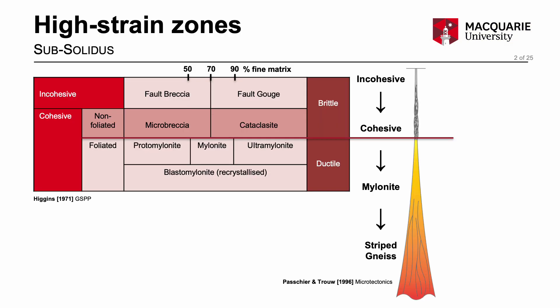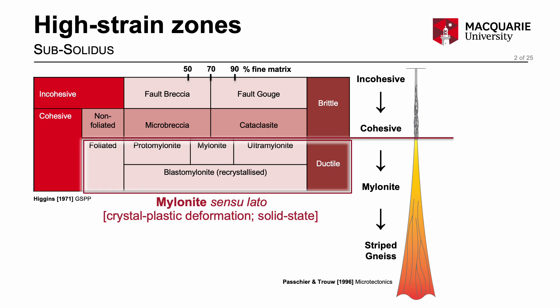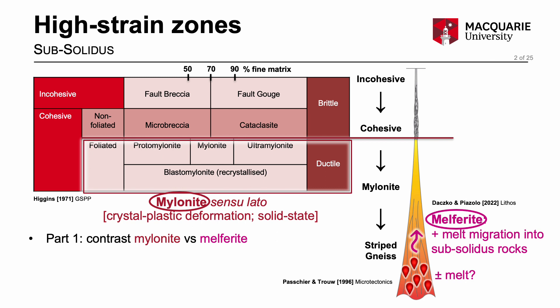High strain zones are classified with a broad division between brittle versus ductile deformation mechanisms. For this presentation I use mylonite in the broad sense where modern usage of the term implies crystal plastic deformation in the solid state. Our research has focused on high strain rocks that deform in the presence of melt, and in particular where melt has migrated along high strain zones into and through subsolidus rocks that previously didn't contain melt. We call these high strain rocks melphorite.